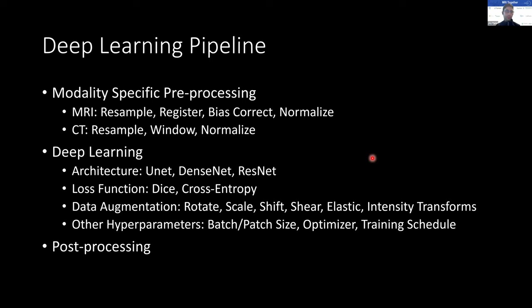I'd like to conclude with a brief outline of what a deep learning pipeline looks like. Starting a new project should not mean starting everything from scratch. For medical imaging tasks, preprocessing depends on the modality — whether it's MRI, CT, or X-ray. Based on the deep learning task — segmentation, classification, or detection — you'll be using different architectures, different loss functions, and different augmentations. There's also task-specific post-processing. All of this can be containerized into a package to speed up the development stage of a new deep learning algorithm.